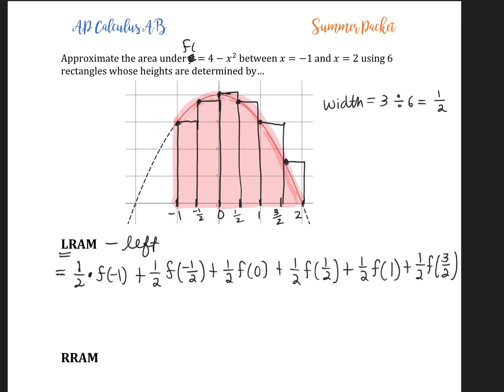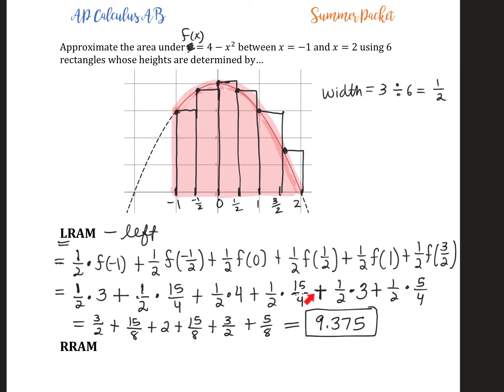Plugging in negative 1 for x: negative 1 squared is 1, so 4 minus 1 is 3. This gives 1 half times 3. Pause the video to find the other y values. I found the y values to be 15 fourths, 4, 15 fourths, 3, and 5 fourths. Multiplying by 1 half and summing gives 9.375, or 9 and 3 eighths. So the approximate area under 4 minus x squared from negative 1 to 2 with 6 rectangles is 9.375.